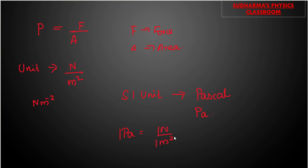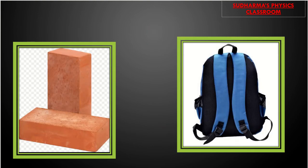If a force of 1 Newton is applied on an area of 1 meter square, we say the pressure is 1 Pascal. Now, how do we understand this in real life? Let us consider the example of a brick. The same brick is kept in two different ways — will there be any difference in the pressure applied on the floor? We will understand that through a numerical.